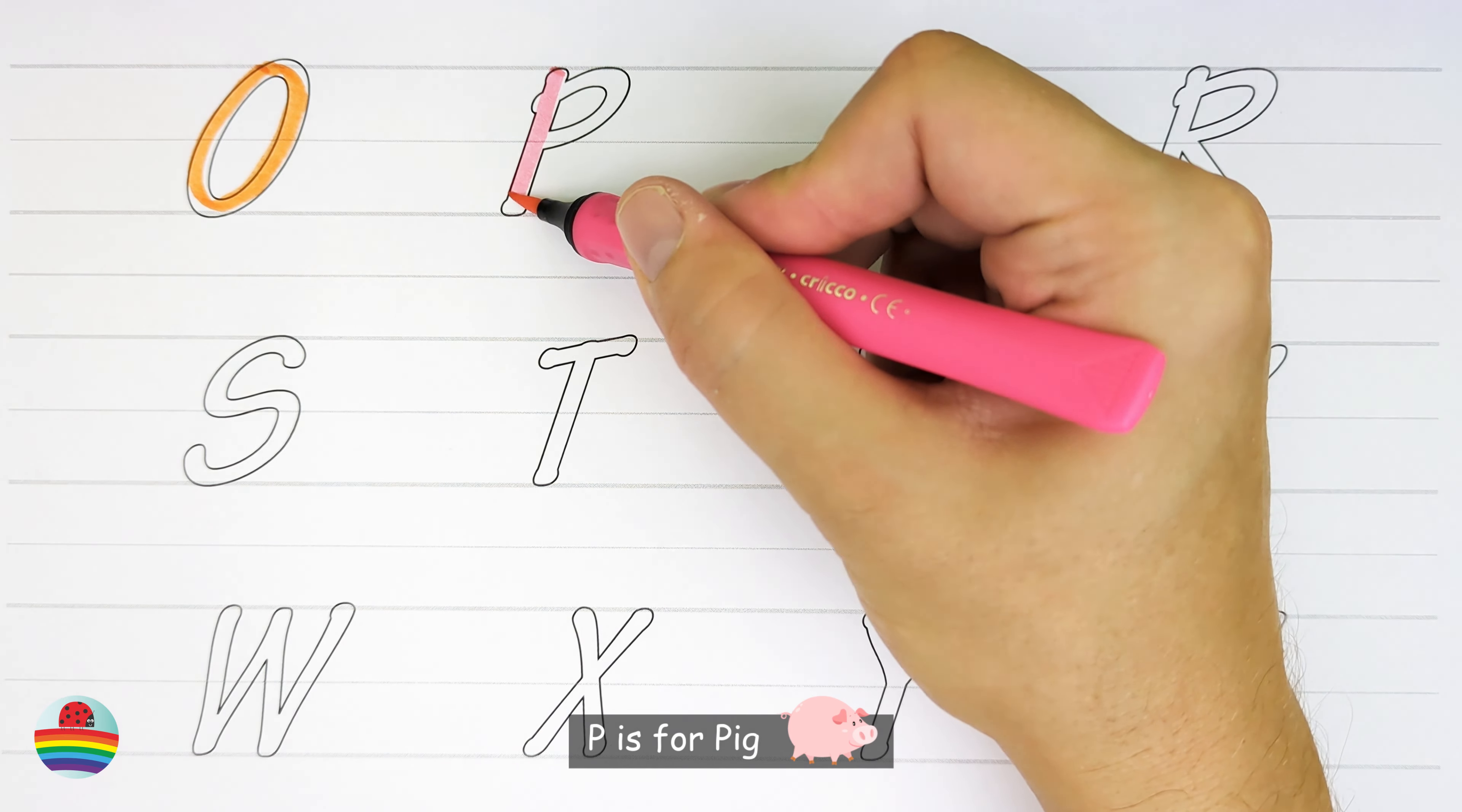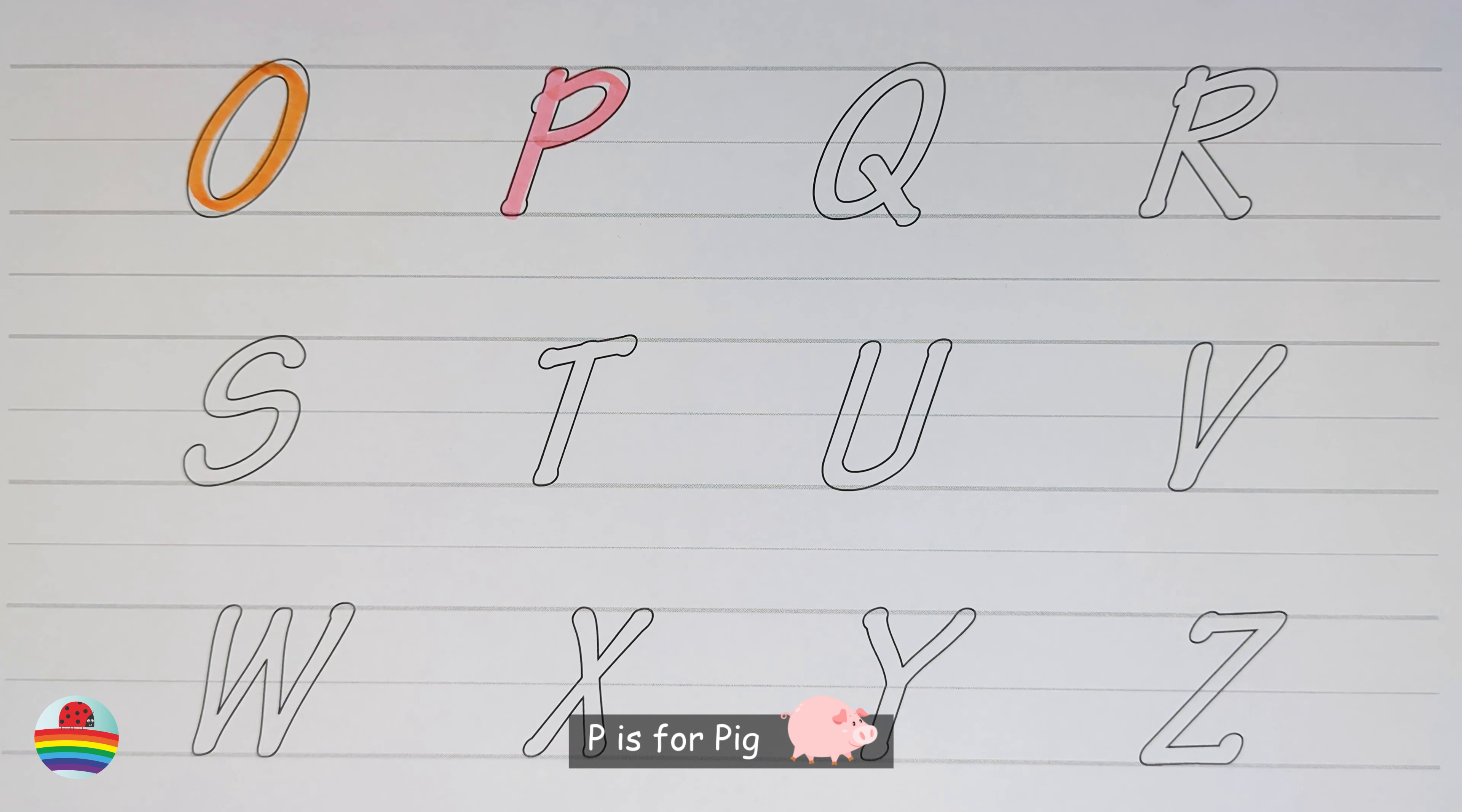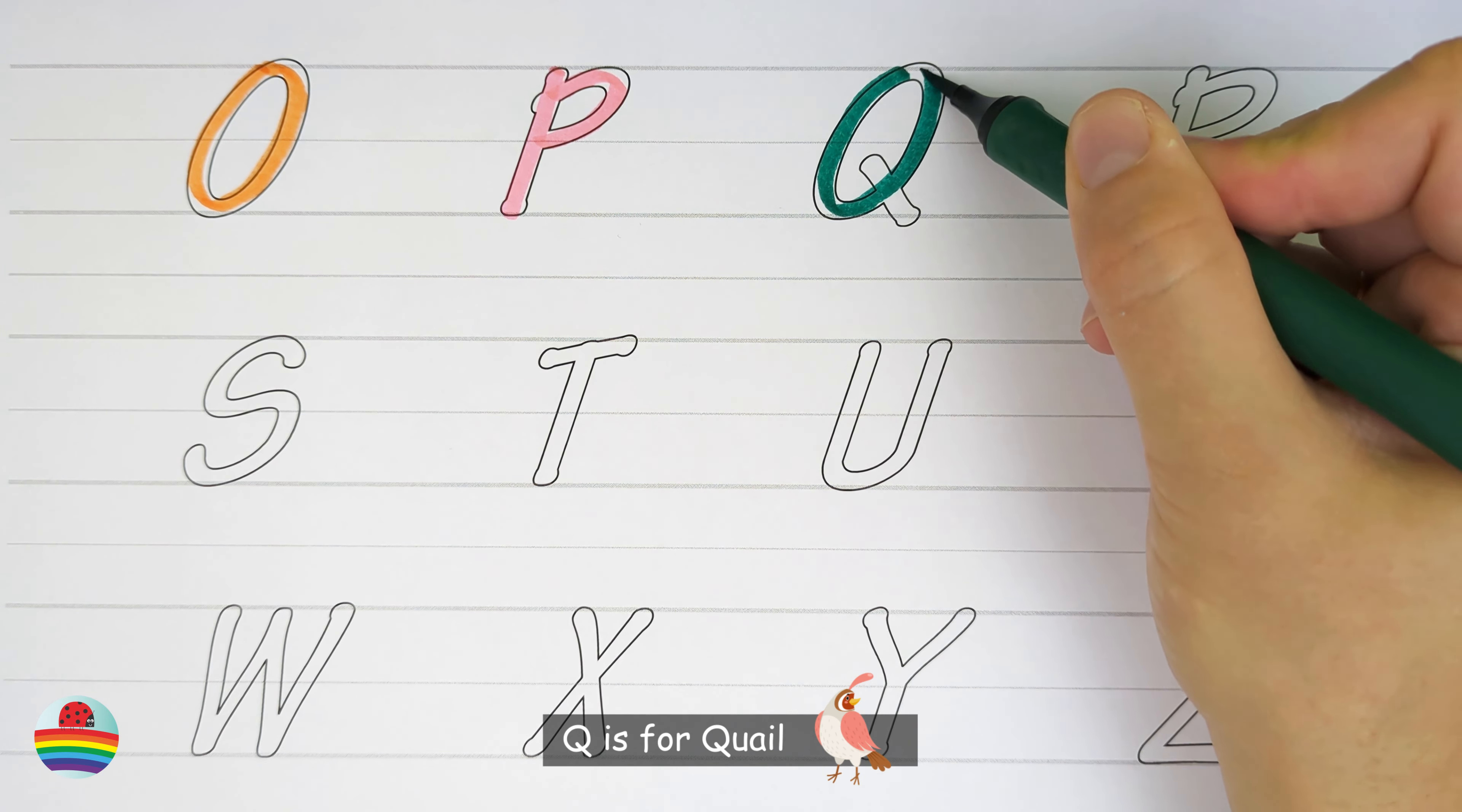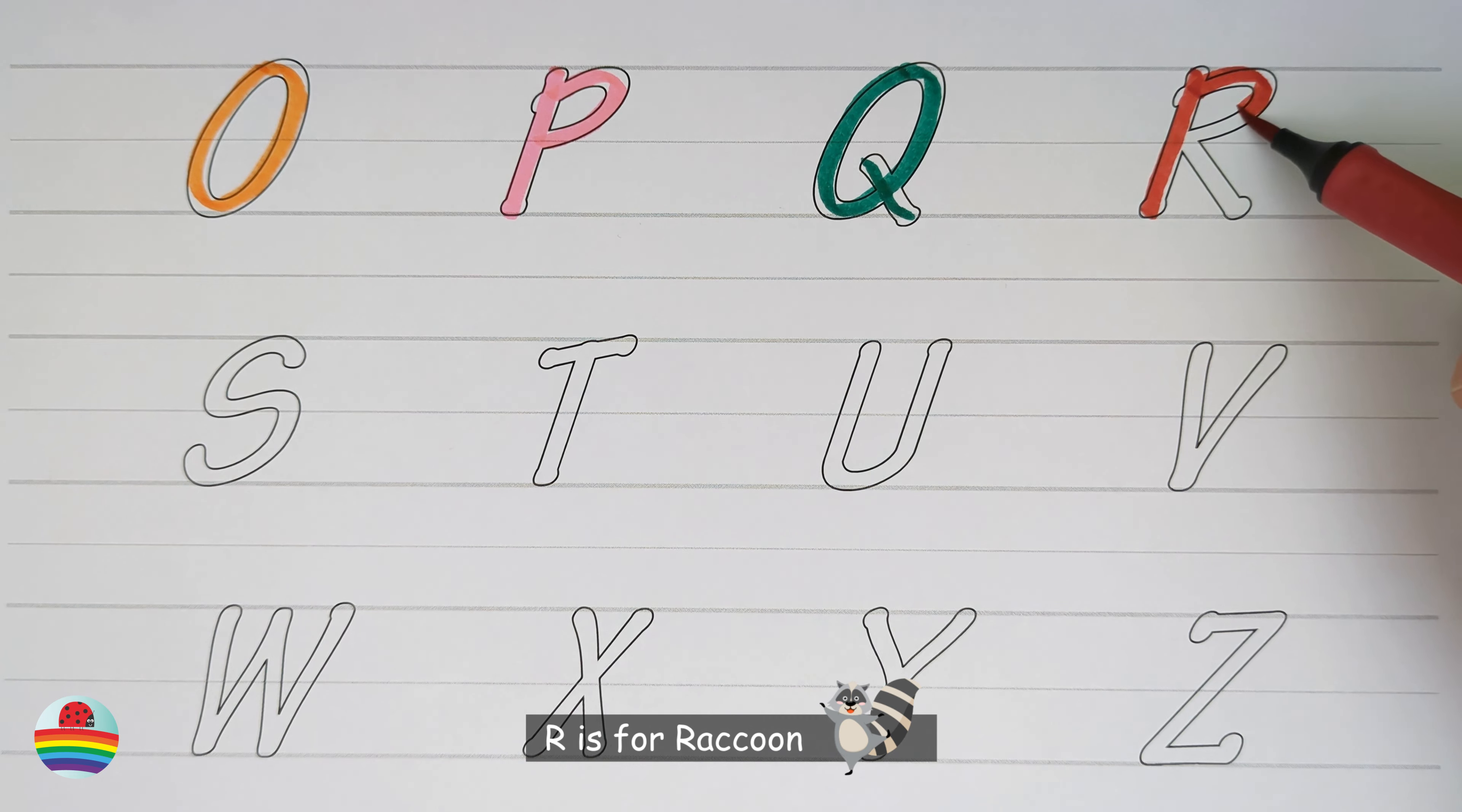P. P is for Pig. Q. Q is for Quail. R. R is for Raccoon.